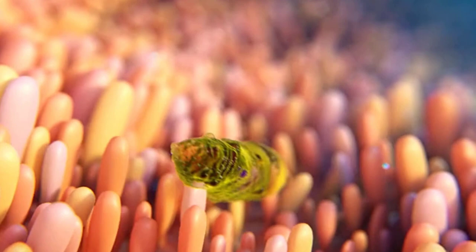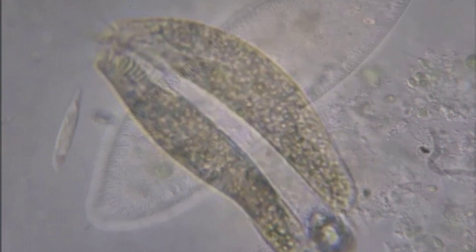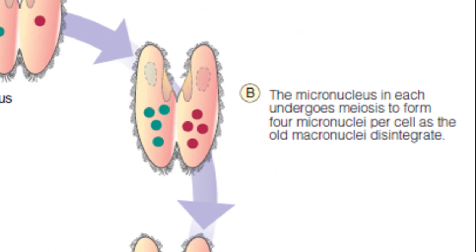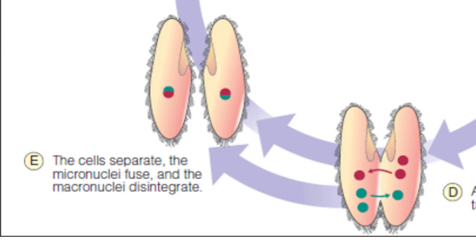Ciliates such as paramecium reproduce by the process of conjugation, involving an exchange of micronuclei to form new macronuclei. Two compatible cells make contact and a cytoplasmic bridge forms between them. The micronucleus in each paramecium undergoes meiosis to form four micronuclei per cell. As the old macronuclei disintegrate, three micronuclei disintegrate and the one remaining undergoes mitosis. An exchange of micronuclei takes place, the cells then separate, the micronuclei fuse, and the macronuclei are disintegrated. The new macronucleus forms in each cell from mitotic divisions of the micronucleus.